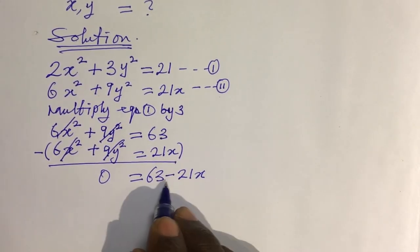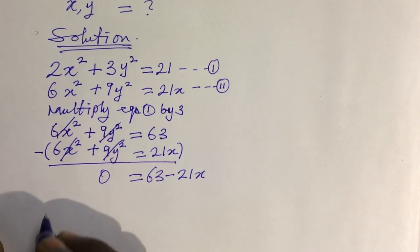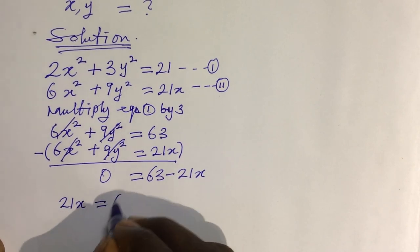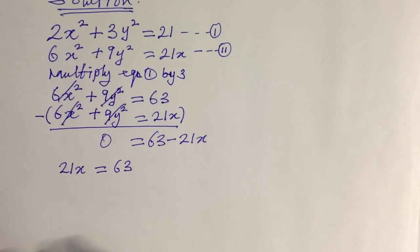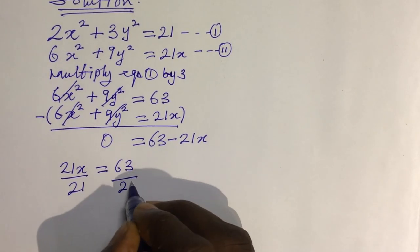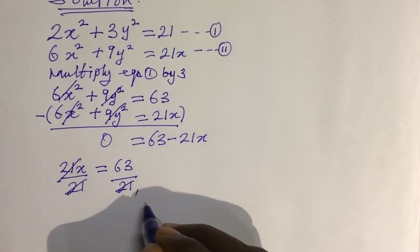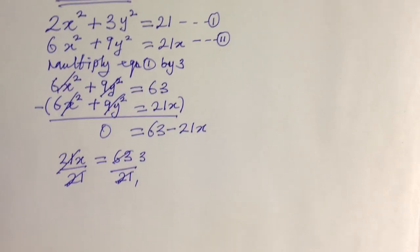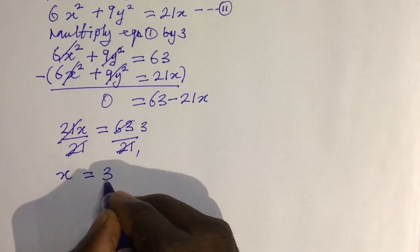Sending −63 to the other side, it becomes +63. So we have 21x = 63. Dividing both sides by 21 gives x = 3. We've gotten our first value for x.